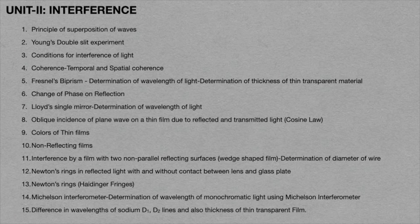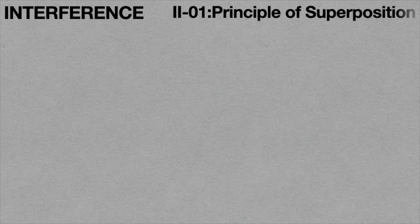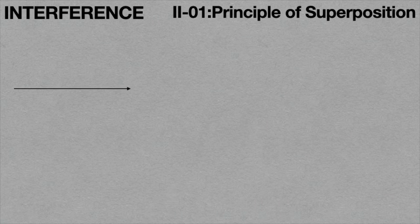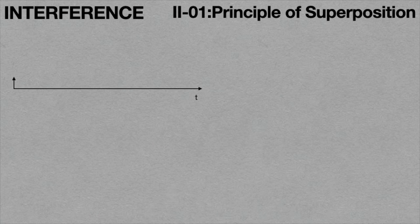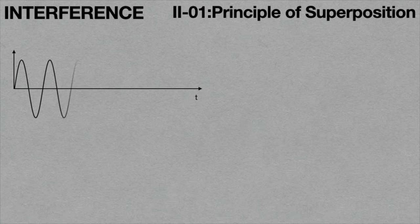In this lecture video, I would like to discuss the very first topic on interference — that is the principle of superposition of waves. We know that according to Huygens' theory, light always travels in the form of waves. In this, crests and troughs are formed, and the particles of light always move perpendicular to their wave propagation. A light wave coming from a light source in a medium will look like this form, as we can see in this animation.